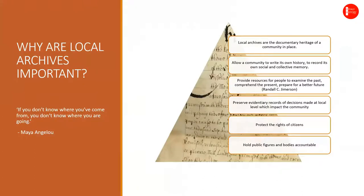So why do we keep all this material and go to all the trouble of keeping it safe and secure, cataloguing it and making it accessible? And why should local historians use this material for their research? Local archives are the documentary heritage of a community in place. Primary sources such as local archives allow a community to write its own history and to record its own social and collective memory. Archives provide resources for people to examine the past, comprehend the present and prepare for a better future. They also preserve the evidentiary records of decisions made at local level which impact the community — from the grand jury, to the boards of guardians, to the rural district councils, to the county boards of health, to the county councils — protecting the rights of citizens and holding public figures and bodies accountable.